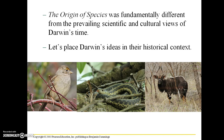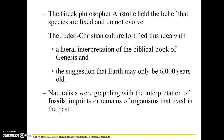The Origin of Species was fundamentally different from the prevailing scientific and cultural views of Darwin's time. Darwin was proposing something fairly radical: that all the diversity of life on Earth was not created in its current form, but rather evolved from common ancestry. The Greek philosopher Aristotle held the belief that species are fixed and do not evolve, and the Judeo-Christian culture reinforced this idea with a literal interpretation of the biblical book of Genesis and the suggestion that Earth may only be 6,000 years old.